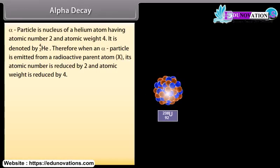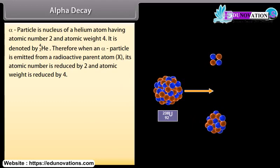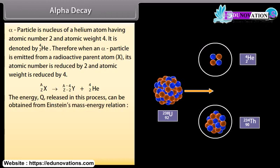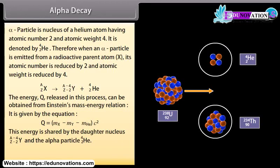Alpha decay: An alpha particle is the nucleus of a helium atom, having atomic number 2 and atomic weight 4. When an alpha particle is emitted from a radioactive parent atom X, its atomic number is reduced by 2 and atomic weight is reduced by 4. The energy Q released in this process can be obtained from Einstein's mass-energy relation: Q = (M_X − M_Y − M_He) × c². This energy is shared by the daughter nucleus and the alpha particle.